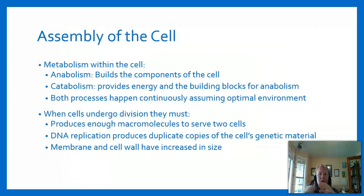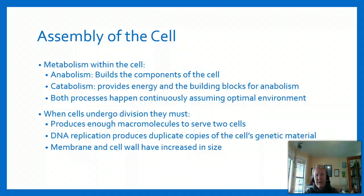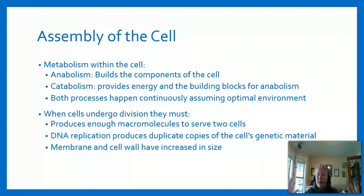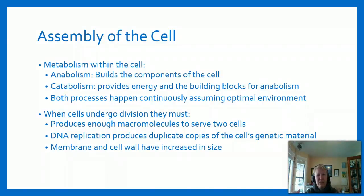To review key terms: anabolism builds the components of the cell, while catabolism provides energy and building blocks by breaking down molecules that can be used later in anabolic processes. Both processes happen continuously in an optimal environment. Once everything is built up, the cell will undergo division, which requires enough macromolecules for two cells - meaning DNA must be replicated and the cell membrane must double in size as well. It's a very delicate balance within the cell.